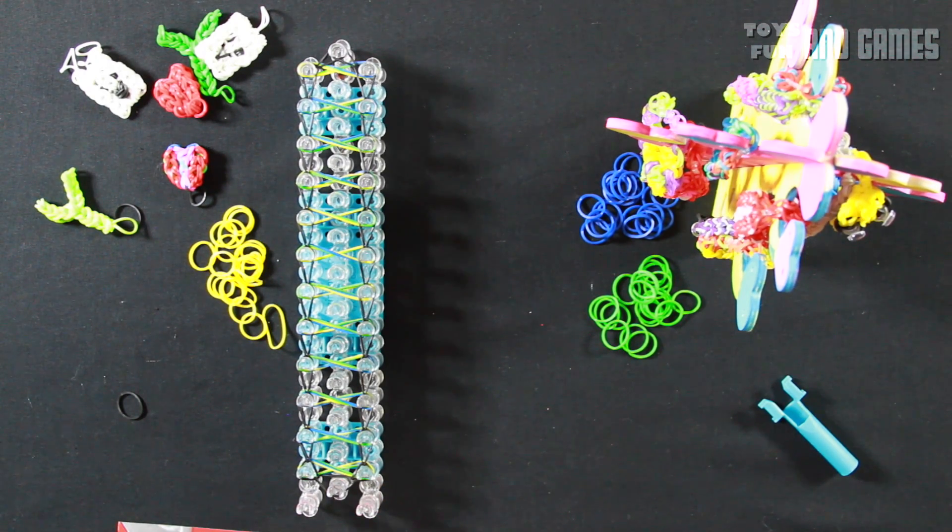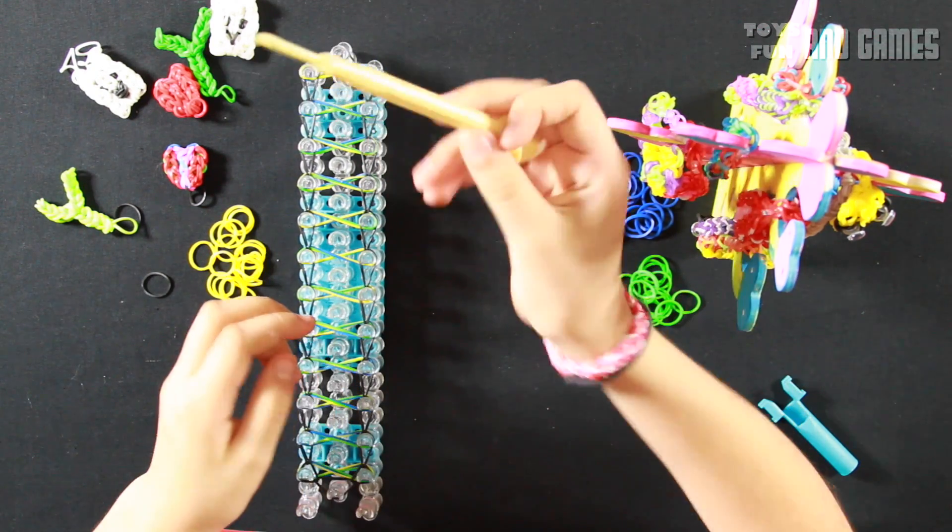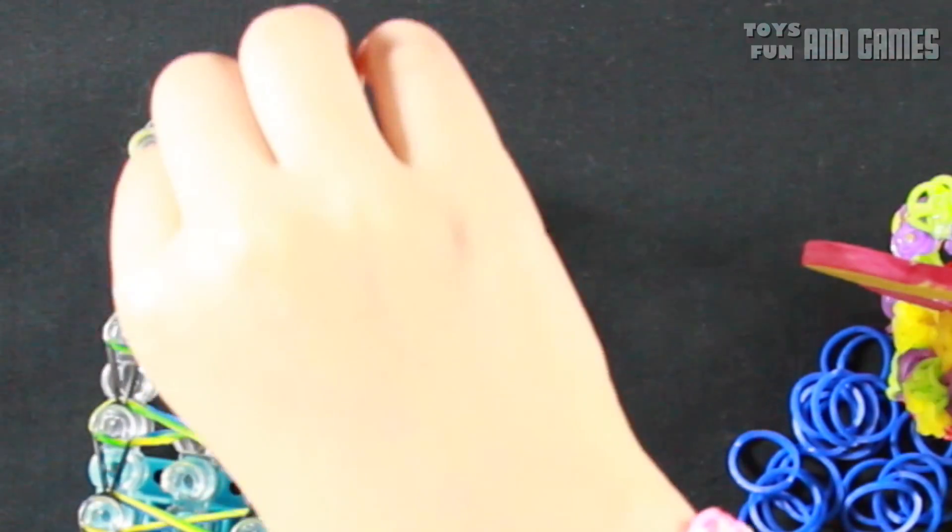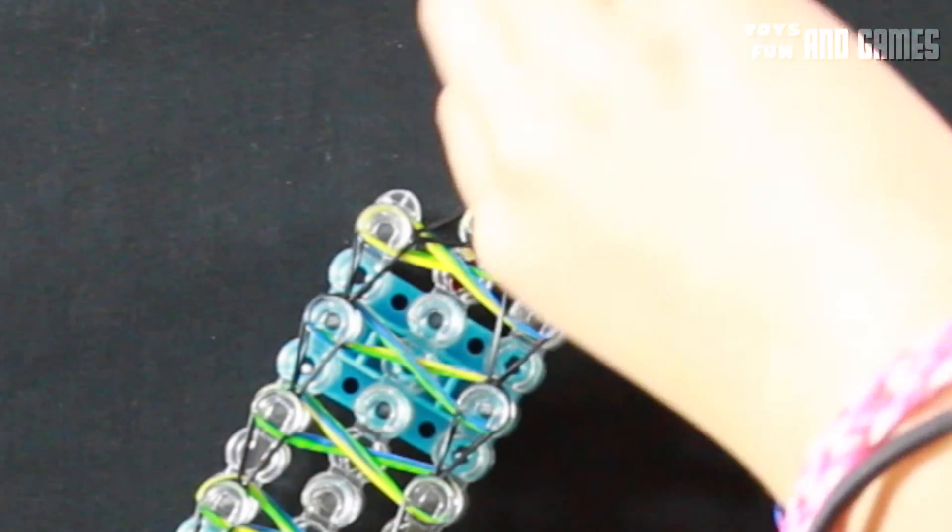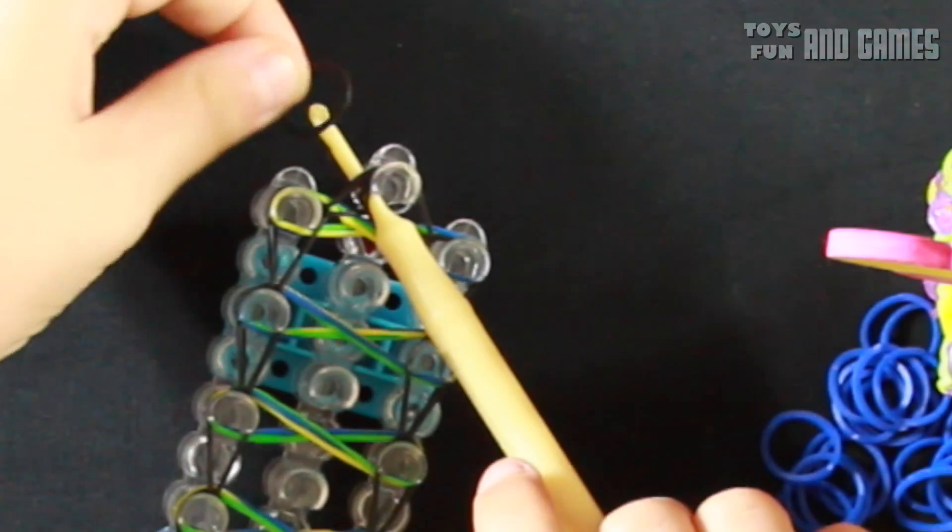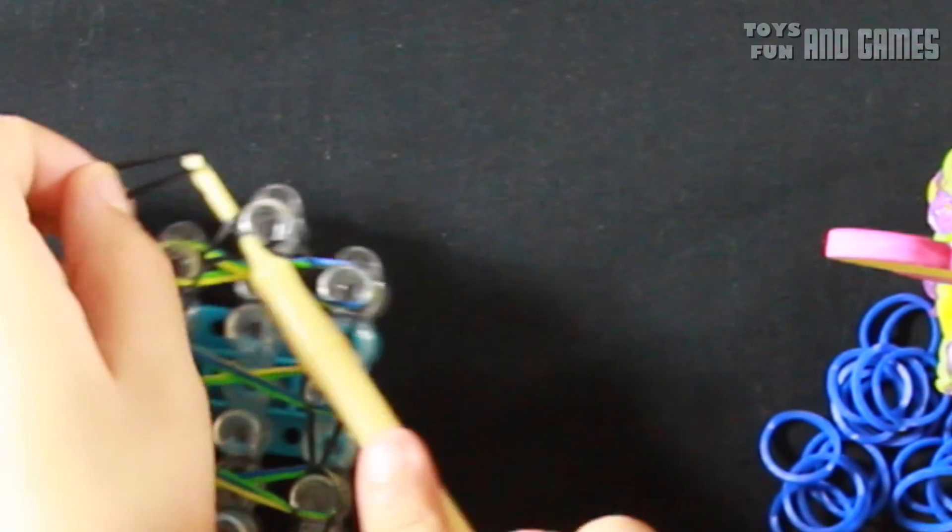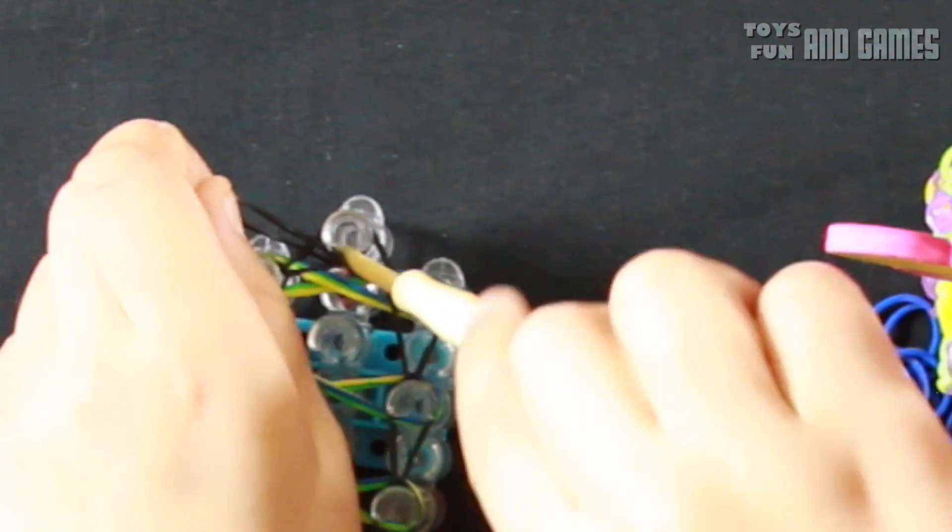Now we are ready to finish the bracelet. First, what you need to do is put your hook down here. Pull it to the side like this. That's what it should look like. And then grab your rubber band, and then pull it up. Oops, having some trouble.